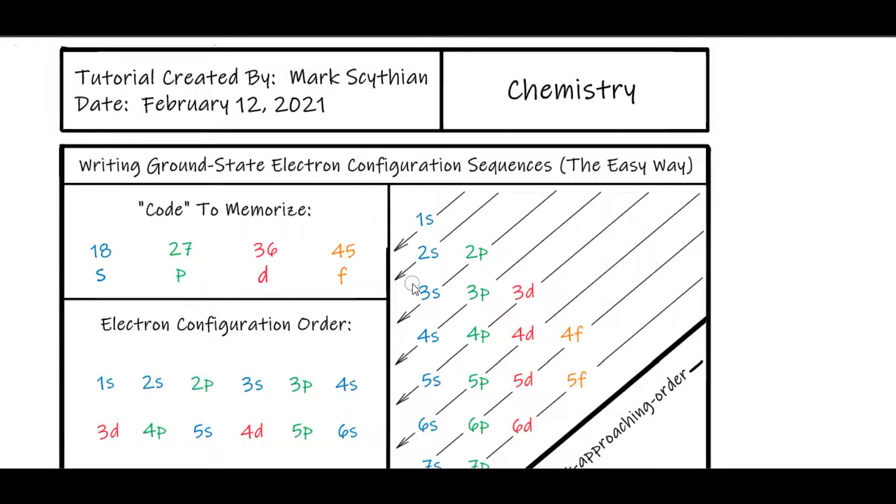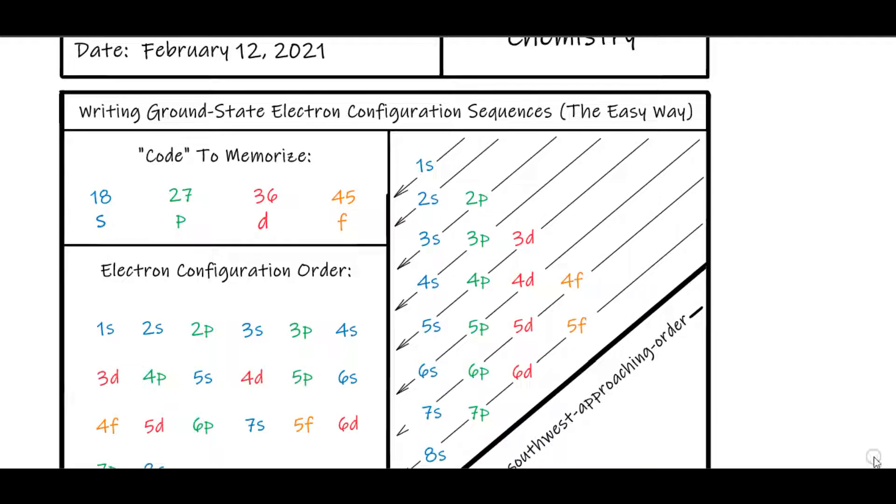Here's an easy way to write ground state electron configuration sequences. There is just a code to memorize: 18, 27, 36, 45.